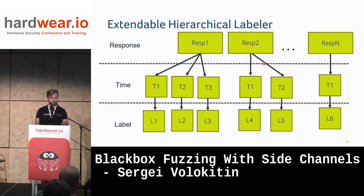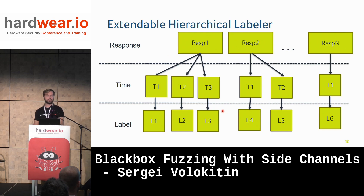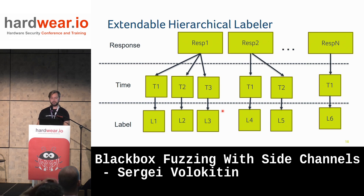In a simple case with only two sources — response data and timing — we try to generate a unique label for each execution. This approach is extensible; we can always add another layer of side channels such as EM traces or flash command lines. The hierarchy branches first on response differences, then on timing. For example, response 1 with timing 1 gives label 1, while response 2 with timing 1 gives label 4. This lets us build a graph of all different labels. For each new execution, we just traverse the tree and check if the response is present — a simple dictionary lookup implemented in Python.